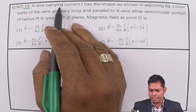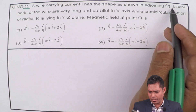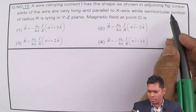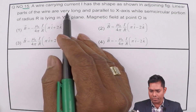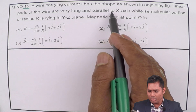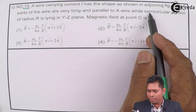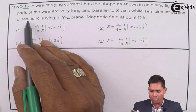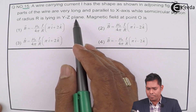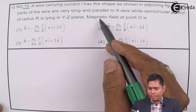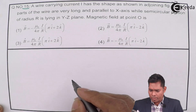A wire carrying current I has a shape as shown in the adjoining figure. The figure is not shown, so I have to draw it. The linear parts of the wire are very long and parallel to the X axis, while the semicircular portion of radius R is lying in the YZ plane. The magnetic field at point O is to be found.